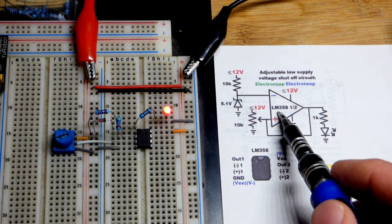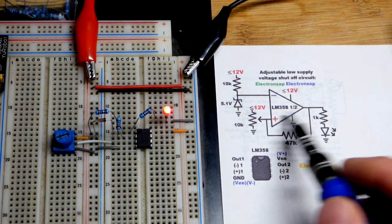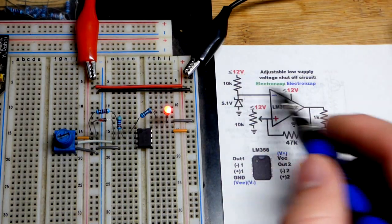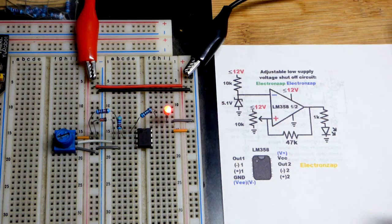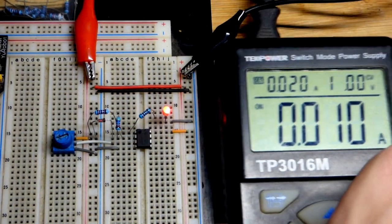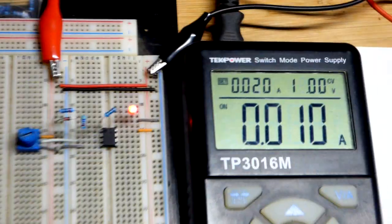So now in this video, we're going to look at a circuit that I made where we have an output that will turn off when the supply voltage gets low enough and it is adjustable. We will look at the details more coming up.